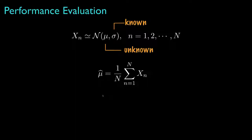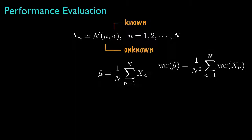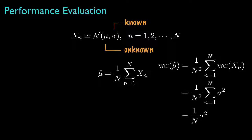Returning to the problem where the standard deviation is known but the mean is unknown and the estimator is the sample mean: because the elements of the summation are independent, the variance for this estimator is the sum of the individual variances scaled by 1/n². Each variance equals sigma squared, so the variance for the estimate is sigma squared divided by n, the number of elements. Because the bias is zero, the mean square error equals this variance, and is therefore inversely proportional to the number of elements in the observation vector.